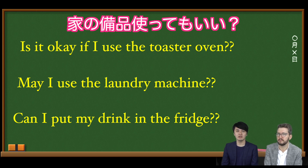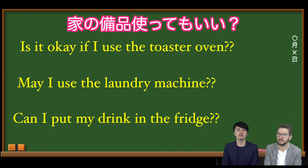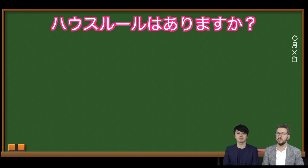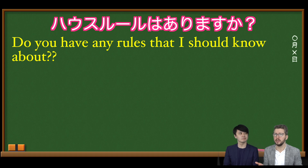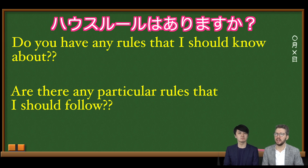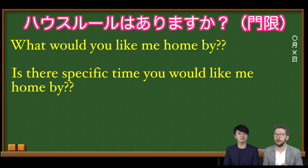To ask about house rules in general, you can say: 'Do you have any house rules that I should know about?' or 'Are there any particular rules that I should follow?' These are general questions that your host parent can use to tell you all the rules. You can also ask specific questions like: 'What time would you like me home by?' or 'Is there a specific time that you would like me to be home by?' or 'Is there a curfew?'